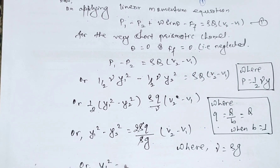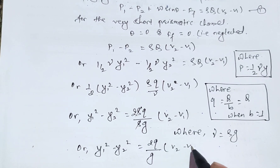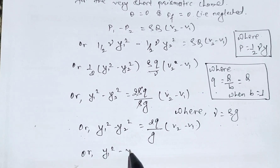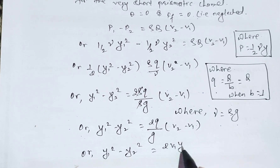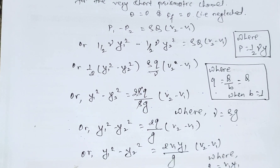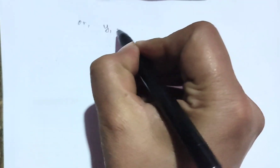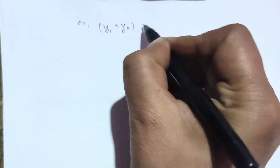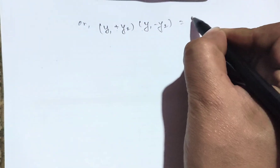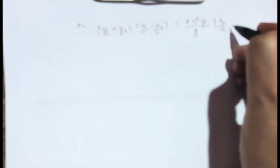Or y1 squared minus y2 squared equals 2q divided by g times (v2 minus v1), or y1 squared minus y2 squared equals 2v1·y1 divided by g times (v2 minus v1), where q equals v1·y1 equals v2·y2.